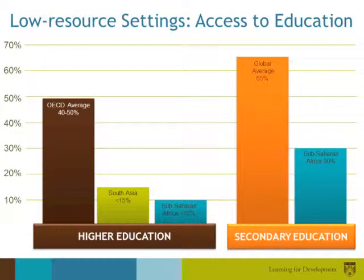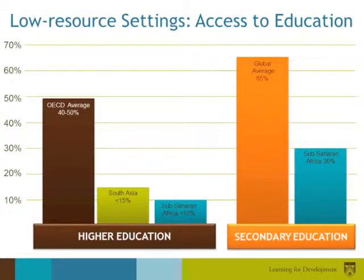According to the World Bank, for countries to achieve sustainable economic development, the age participation rates, or APRs — that is, the participation of the 18 to 24 year olds in higher education — must be in the region of 40 to 50 percent, which is the OECD average. But age participation rates in South Asia are below 15 percent and in sub-Saharan Africa even lower, below 10 percent. Likewise, the global participation rates in secondary education are about 65 percent, while in sub-Saharan Africa only 30 percent of those who complete primary education can move to secondary schools. Developing country governments are looking for alternative means of providing access to quality education to their citizens, and open education in various ways is one such option.